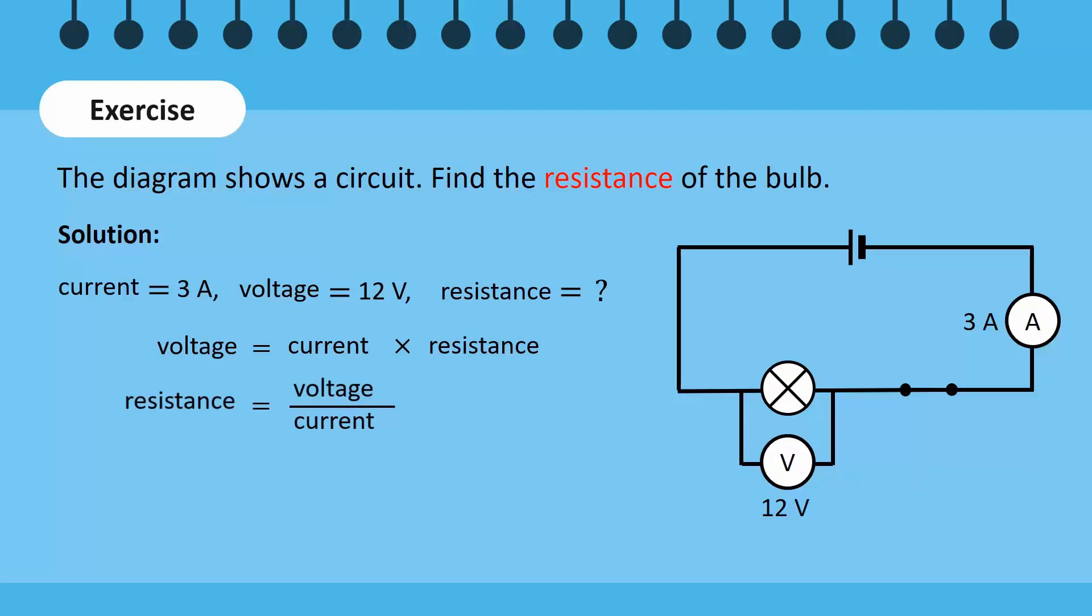Now, by putting the values in the formula and calculating the result, we get a resistance of 4 ohms.